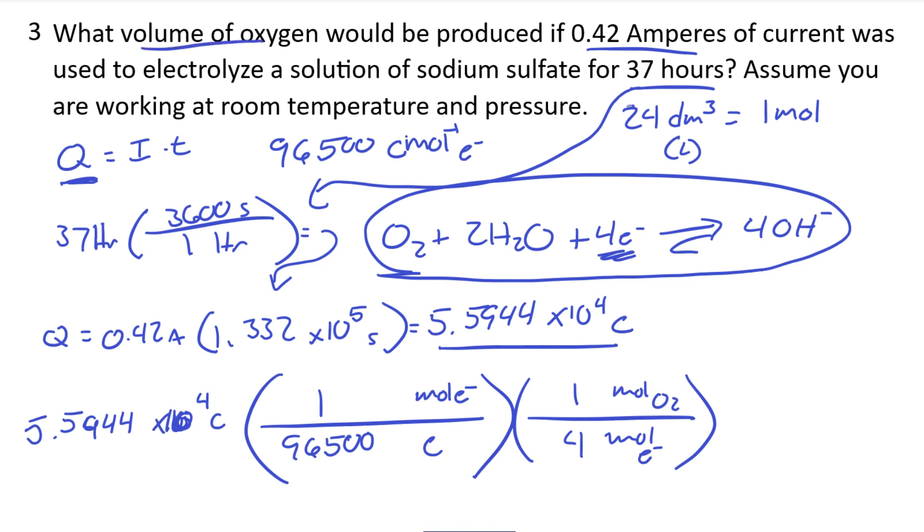And they want volume. And actually that's why we wrote this right here. We see that for every one mole of a gas at room temperature pressure, in this case it's oxygen, it's going to take up 24 decimeters cubed of space. So when we check we see coulombs cancel coulombs. Moles of electrons cancel moles of electrons. We're left with a unit of volume. Which is what we want. So that will give us our answer.